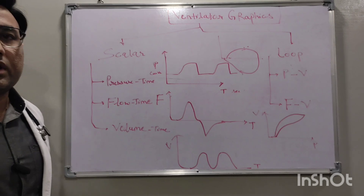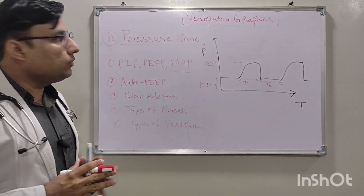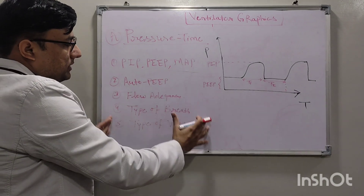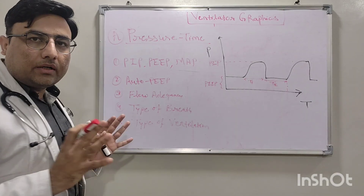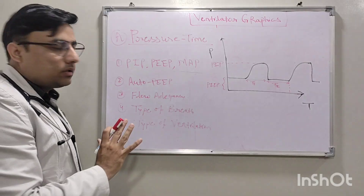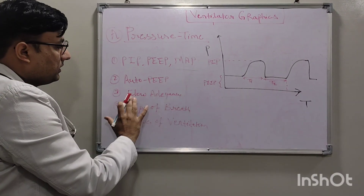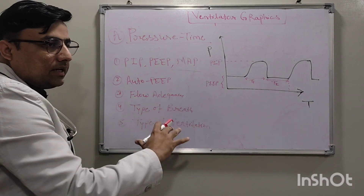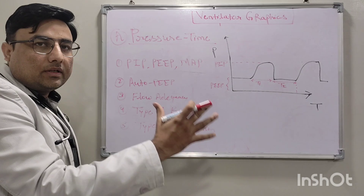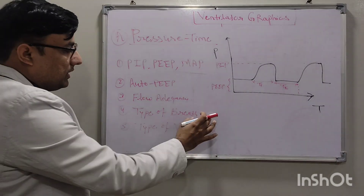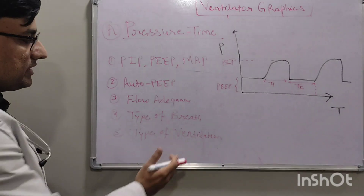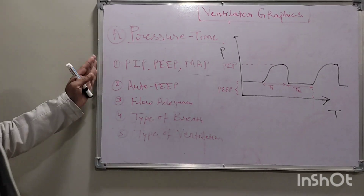Today we will discuss about the pressure-time curve. In the pressure-time scalar graphic, the things we can interpret are: PIP, PEEP, and mean airway pressure. We can also detect auto-PEEP, assess flow adequacy — whether flow is less or excessive — identify the type of breath, whether it is mandatory or triggered, and determine the type of ventilation, whether it is pressure control or volume control.